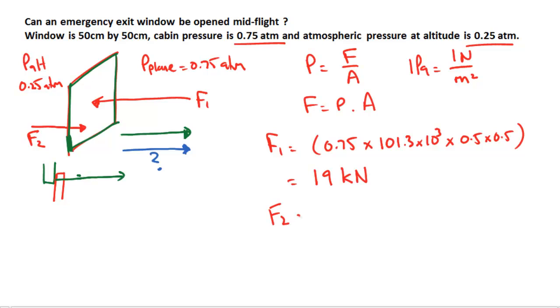What's F2? Well that's going to be the same equation except this pressure here is 0.25 instead of 0.75. But I already know that's one third of 0.75, so I can write that it's one third times 19 kilonewtons, and that's approximately 6.3 kilonewtons.